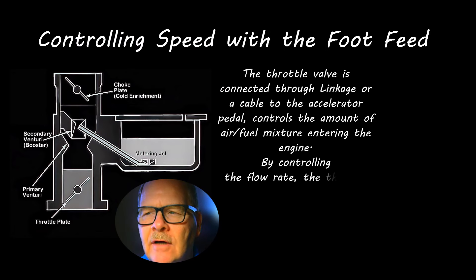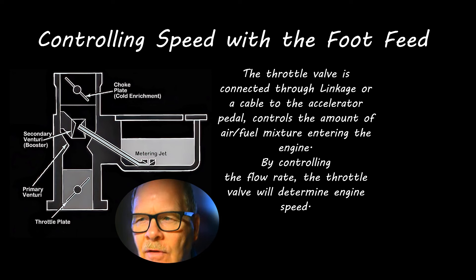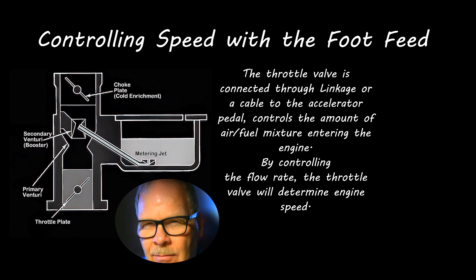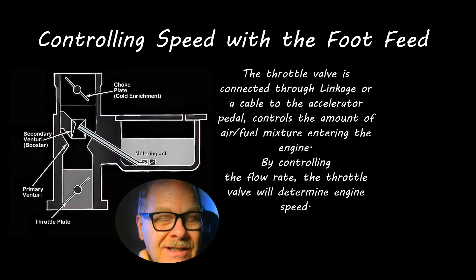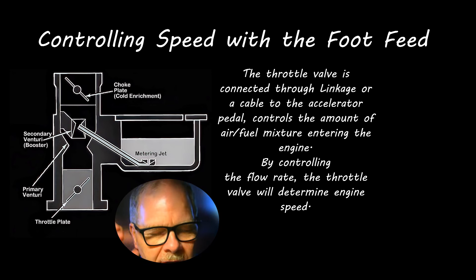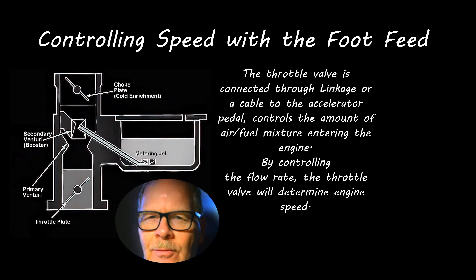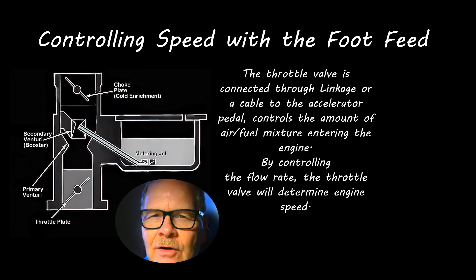Controlling speed with the foot feed: the throttle valve used to be connected with linkage — the accelerator cable or some linkage — and it would control the amount of air-fuel mixture based on where your foot was. So the throttle valve determines basically engine speed and power, and you're the one — or the cruise control — that's deciding to apply the throttle.